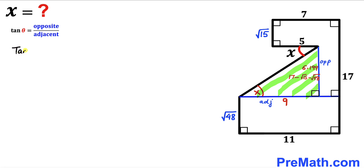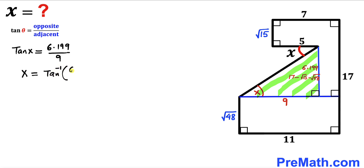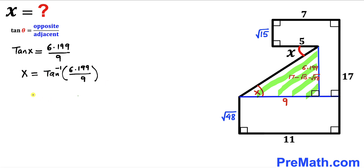Therefore tangent of angle x equals 6.199 divided by 9, which means angle x equals tan⁻¹(6.199 ÷ 9). Using a scientific calculator, this is approximately equal to 34.56 degrees. So our angle x turns out to be approximately 34.56°.